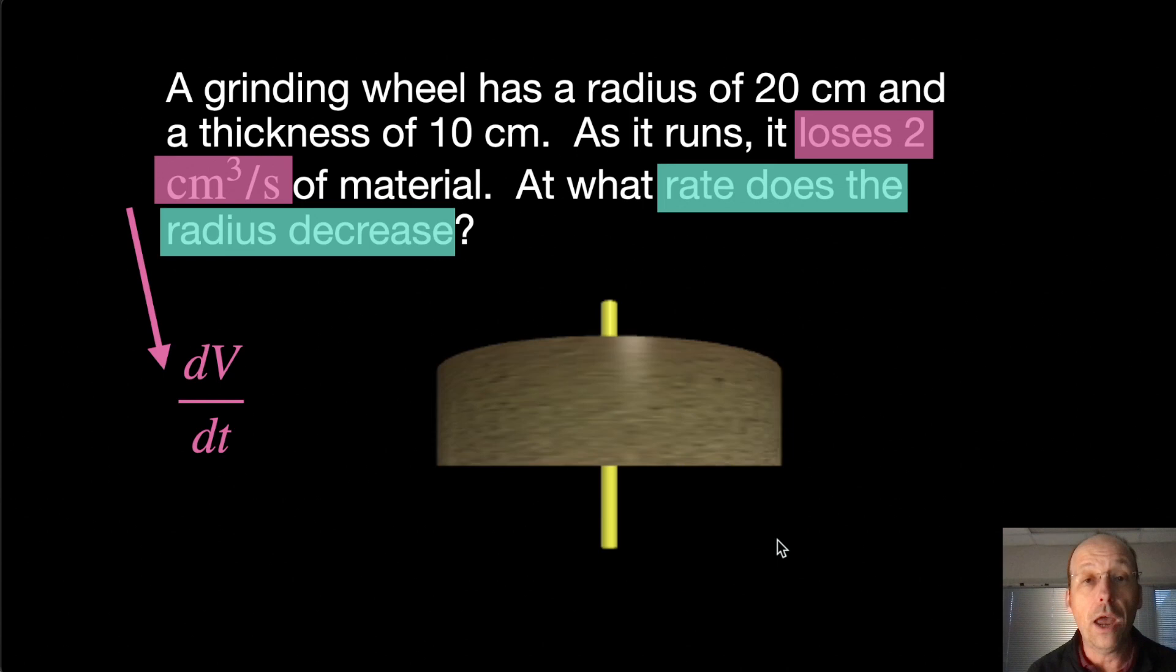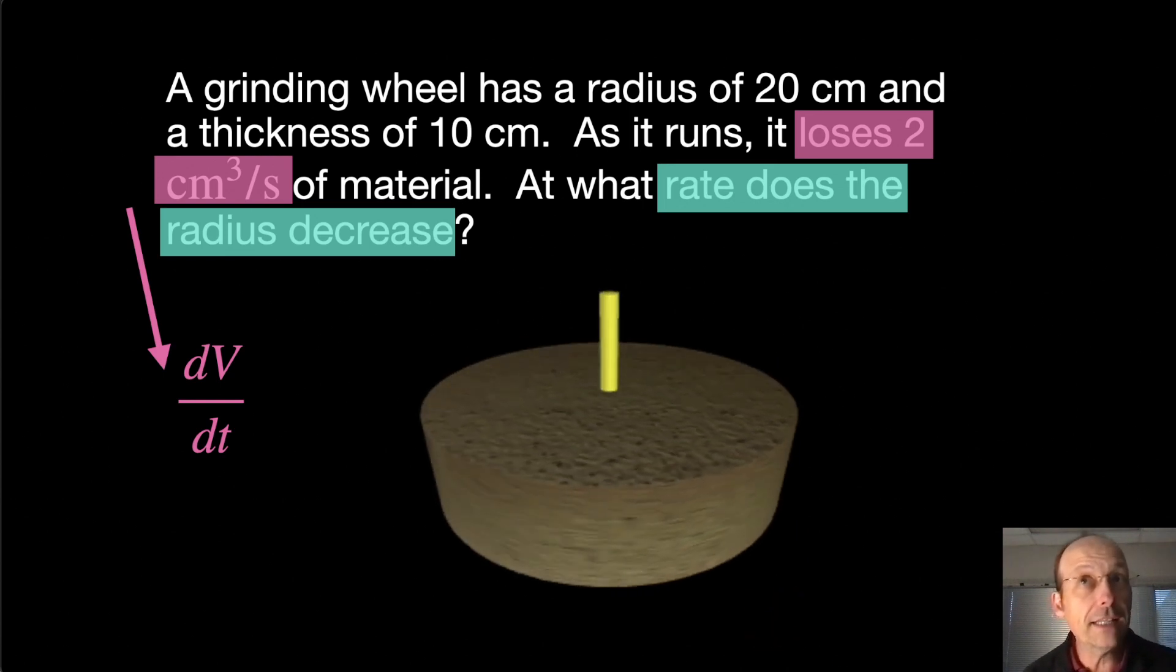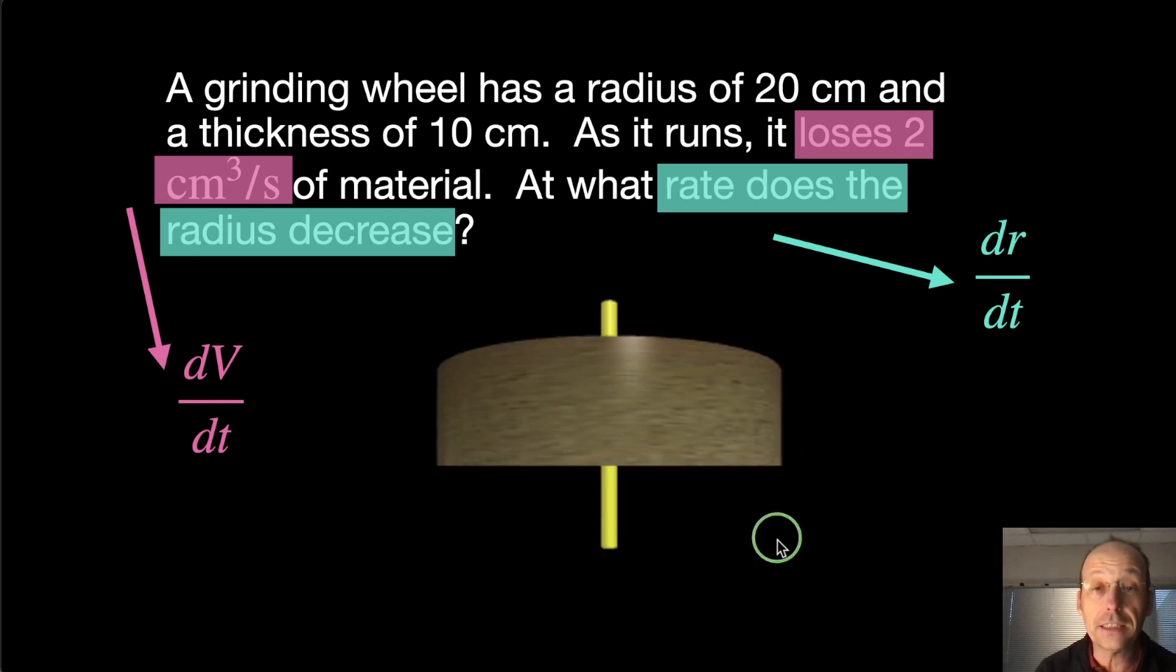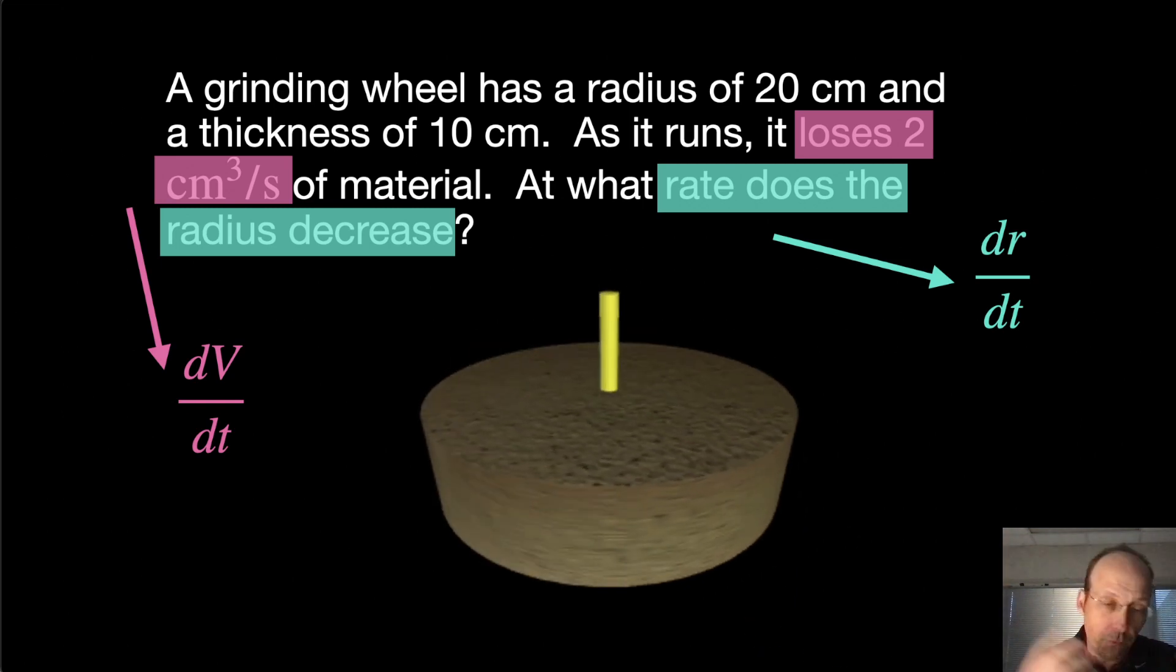Now we have another rate in here. Look at this. At what rate does the radius decrease? So we can write that, at least in our head, as dr/dt. We call the r the radius. It's how fast does the radius change. And that's what we're going to be looking for. So we're given the value for dV/dt, and we want to find dr/dt.